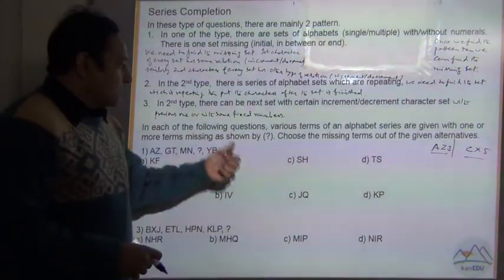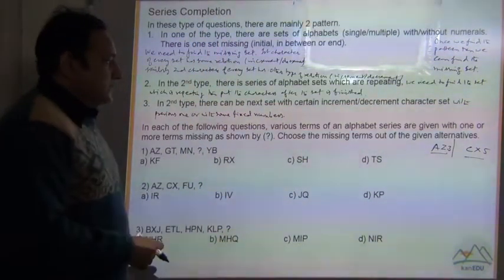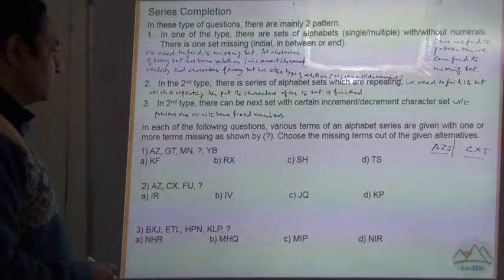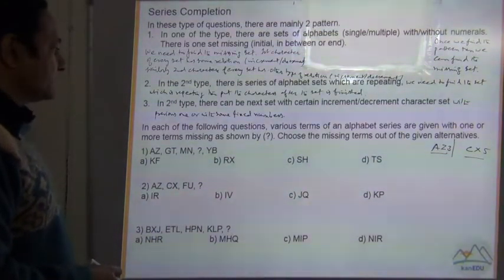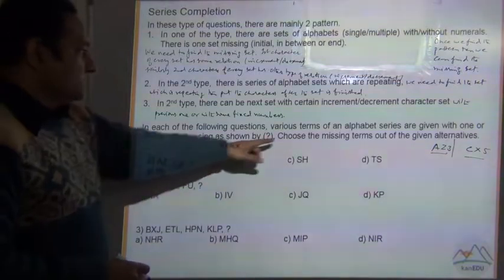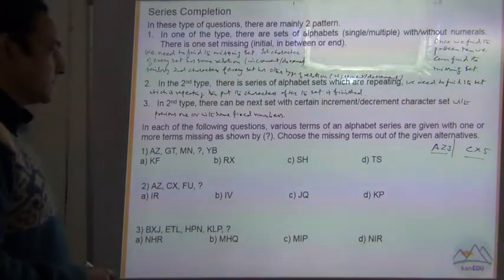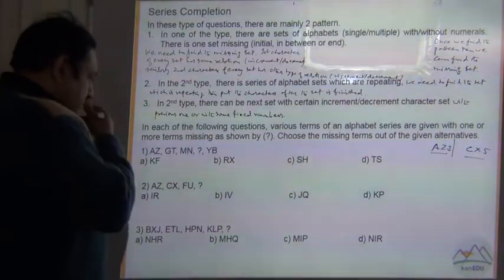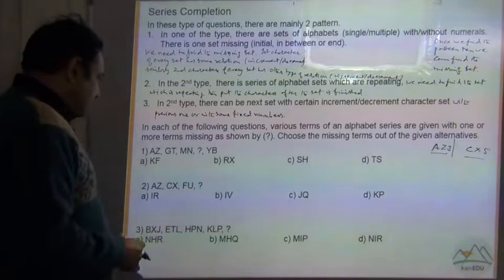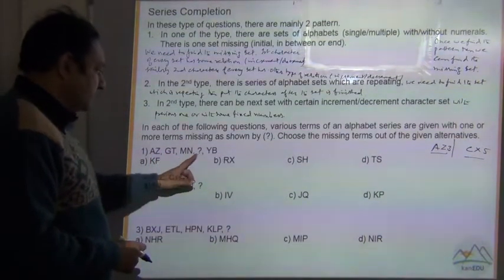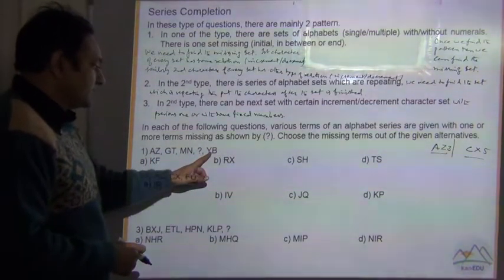In each of the following questions, various terms of an alphabet series are given with one or more terms missing, shown by a question mark. Choose the missing term from the given alternatives. Question 1: the series is AZ, GT, MN, then the missing set, then SB.